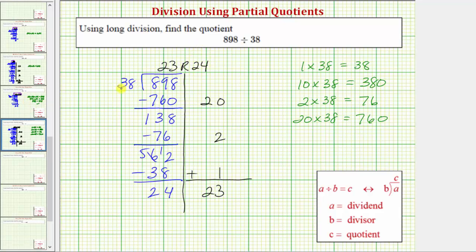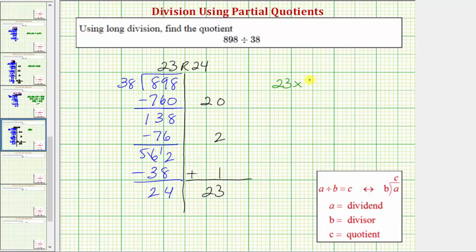So because 38 does not divide evenly into 898, we know 38 is not a factor of 898. But this does tell us that the quotient of 23 times the divisor of 38 plus the remainder of 24 does equal 898.